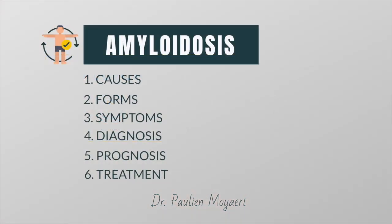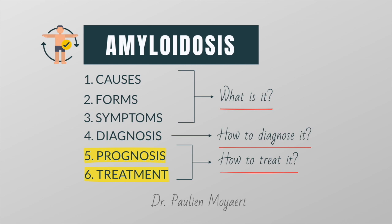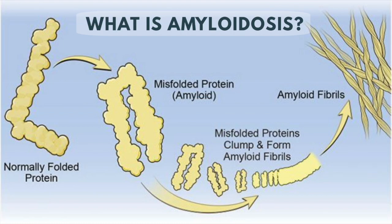Hi everyone, my name is Pauline. I'm a Belgian doctor, and in this video I'll tell you everything a doctor needs to know about amyloidosis — what it is, what the different types are, and how to diagnose and treat this disease. Amyloidosis is a rare disease in which abnormally folded proteins form amyloid fibrils that accumulate in our organs.